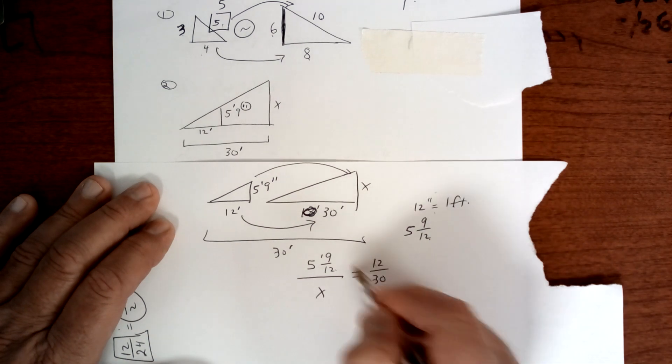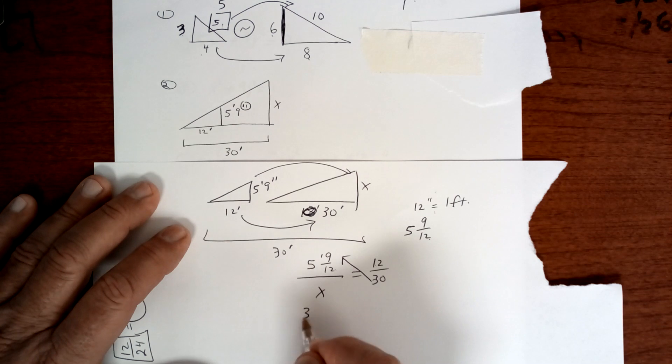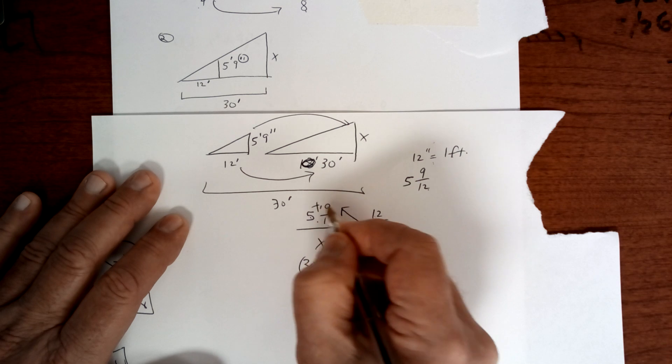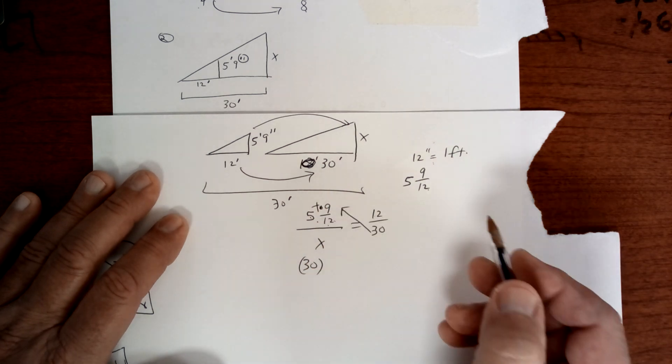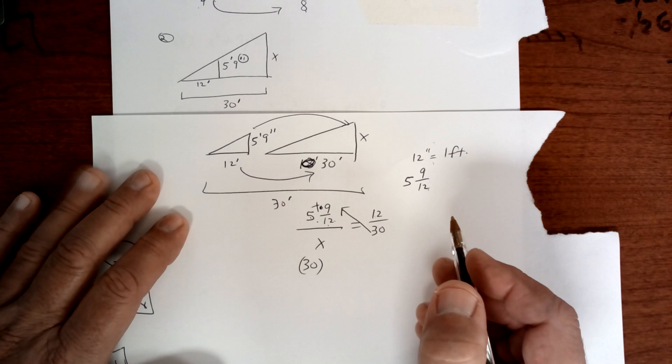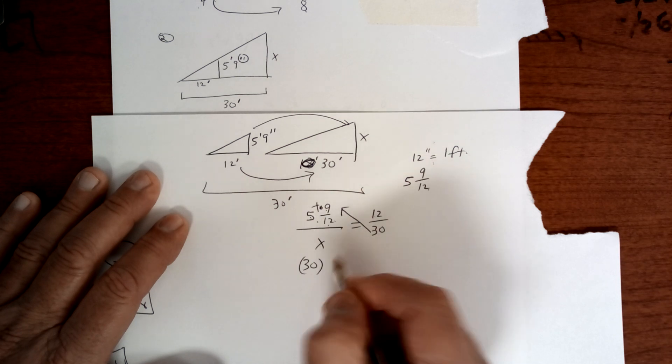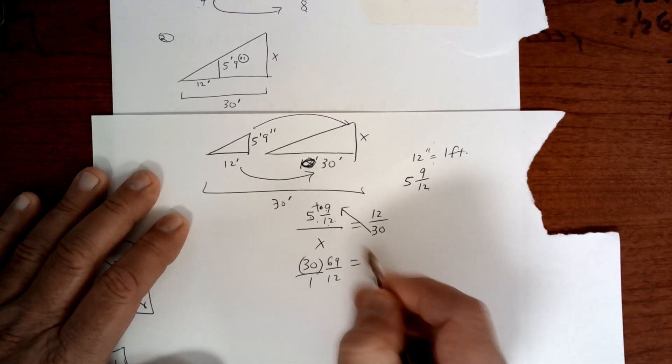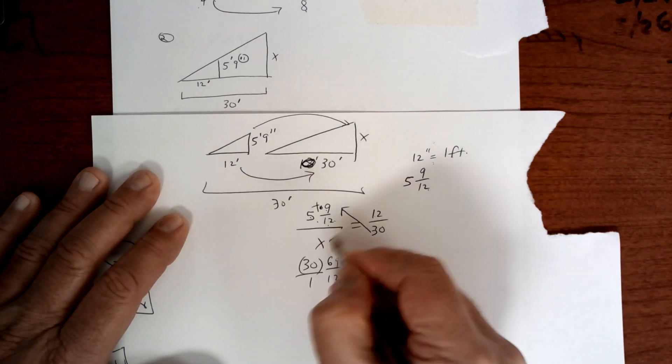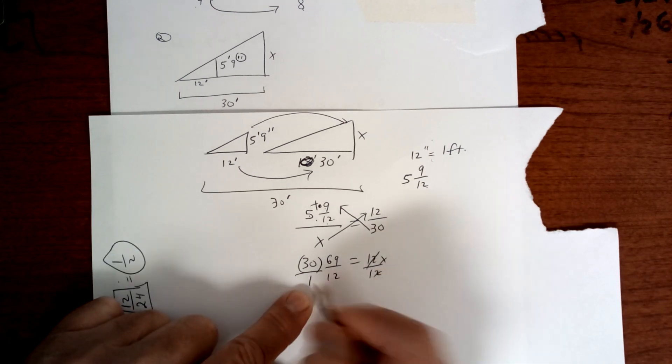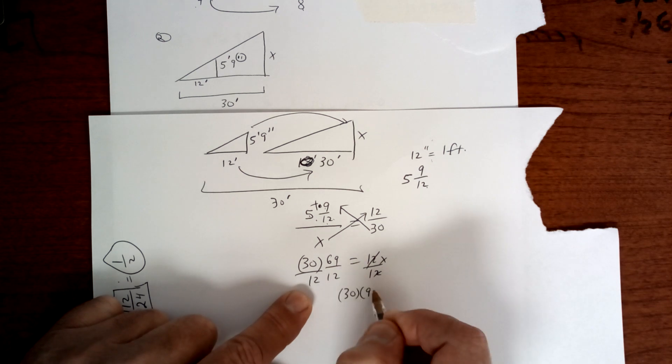Now you've got to change that. So that's going to be 30 times that. 12 times 5 is 60 plus that 9 is going to be 69. Again, 12 times 5 is 60 plus that 9 makes 69 over 12 equals 12x right here. Now you've got to divide by 12. When you divide by 12, the 12 is actually on the bottom. So what you're going to have is 30 times 69 divided by 144.